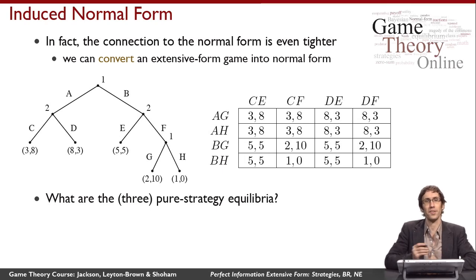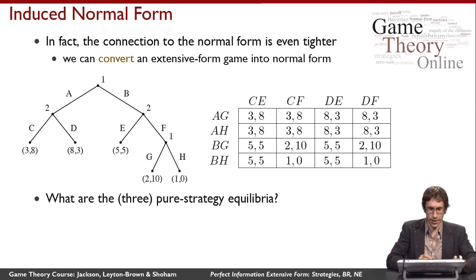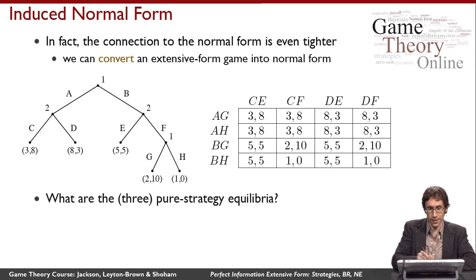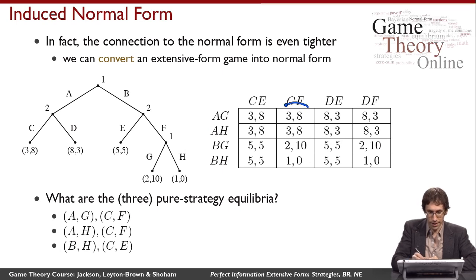I want to look at this game and reason about its three pure strategy equilibria. We can look at the game tree, but it can be hard to read pure strategies directly from it. Instead, it's more convenient to construct the induced normal form, which lists pure strategies directly, and reason about equilibria from there. The three pure strategy equilibria are AGCF, AHCF, and BHCE.